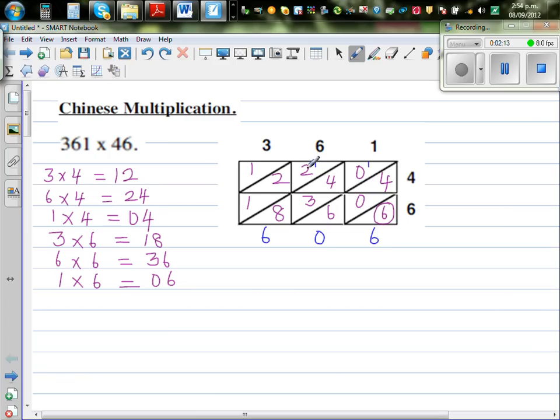1 plus 2 is 3, plus 2 is 5, plus 1 is 6. And then you've got a 1 here. So your answer is 16,606.